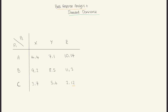Now we'll do iterated dominance. Iterated dominance is basically based on the same logic as best response analysis, just a little more structured. What we want to do is eliminate a row or a column first, then eliminate the opposite — if we eliminated a row in our first move, we eliminate a column in the second move — and continue alternating until we get to Nash equilibrium.